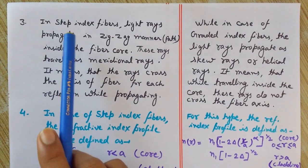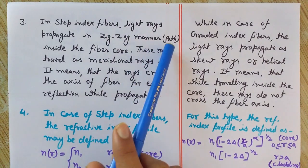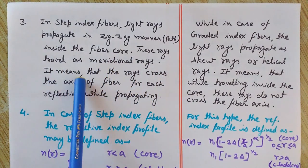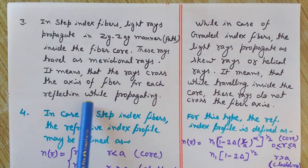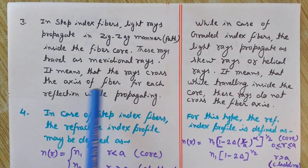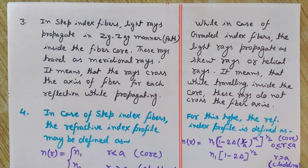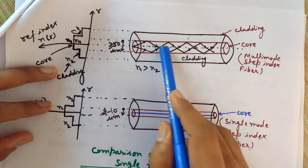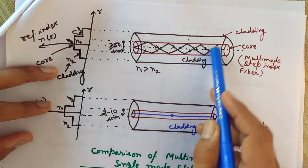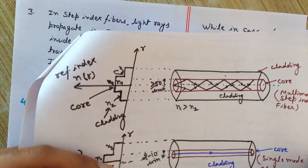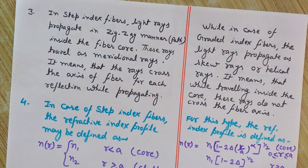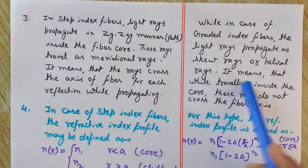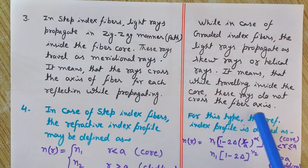The third point: in step index fibers, light rays propagate in a zigzag manner inside the fiber core. These rays travel as meridional rays, meaning the rays cross the axis of the fiber at each reflection while propagating — every time it has a reflection at the core-cladding interface, it crosses the core axis. In graded index fibers, the light rays propagate as skew rays or helical rays, meaning while traveling inside the core these rays do not cross the fiber axis.